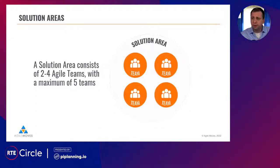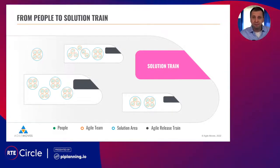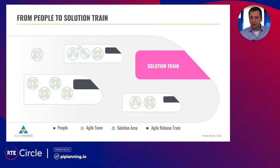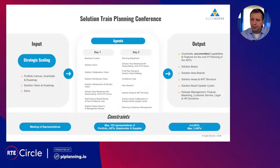It could be that you have agile release trains within a solution train — maybe multiple solution areas have the necessity to coordinate more closely together, so they give themselves a superstructure of an agile release train. But it's not always necessary. You could have a solution train just with solution areas, but it's usually very helpful to also have release trains within the solution train.